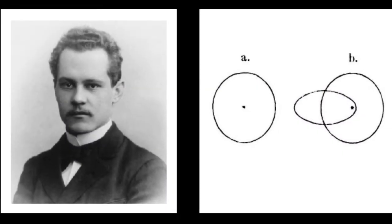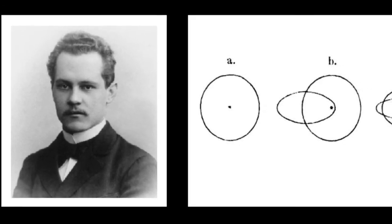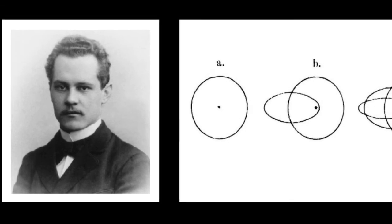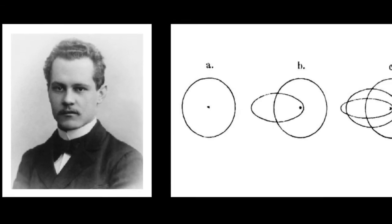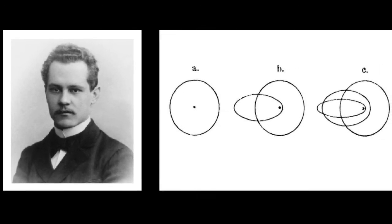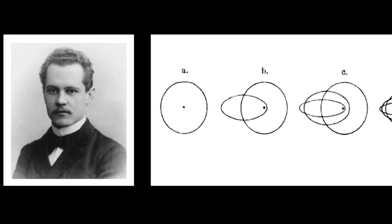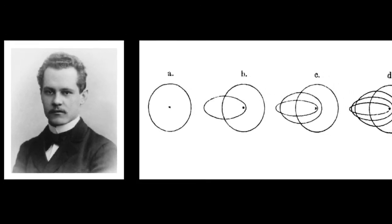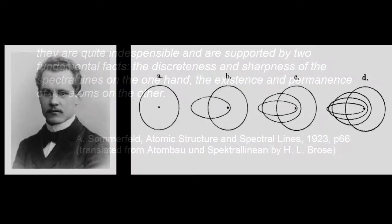Sommerfeld succeeded, however, in making some sense of the spectra by suggesting that electrons can occupy both spherical and elliptical orbits within an energy level. For the elliptical orbits, Sommerfeld combined Kepler's laws for orbiting planets with the new ideas of quantum theory to obtain a specified number of orbits for each energy level, defined by quantum numbers that remain in use today.